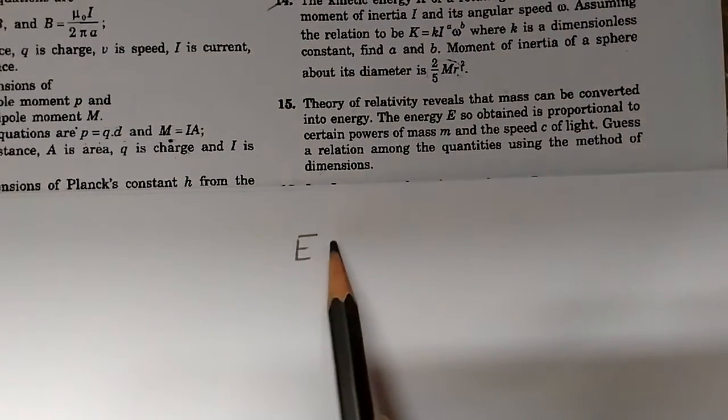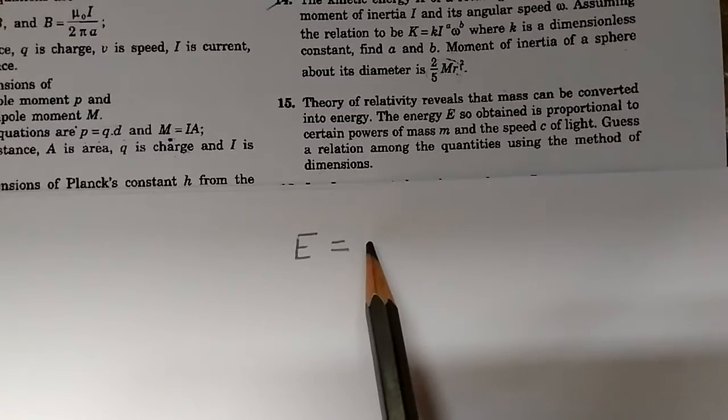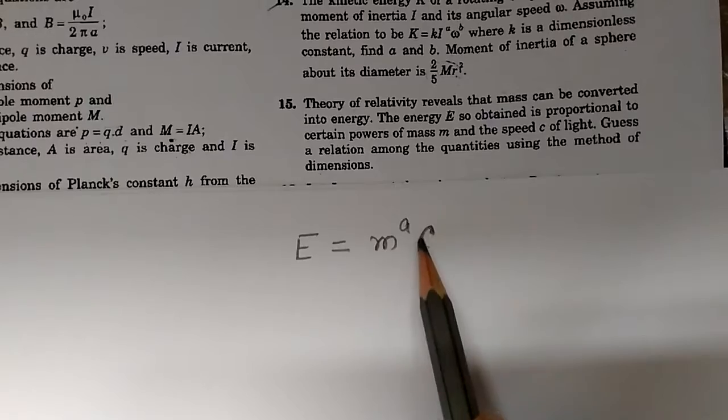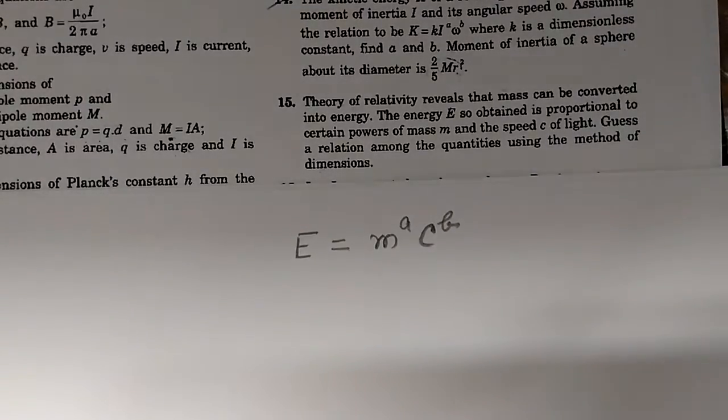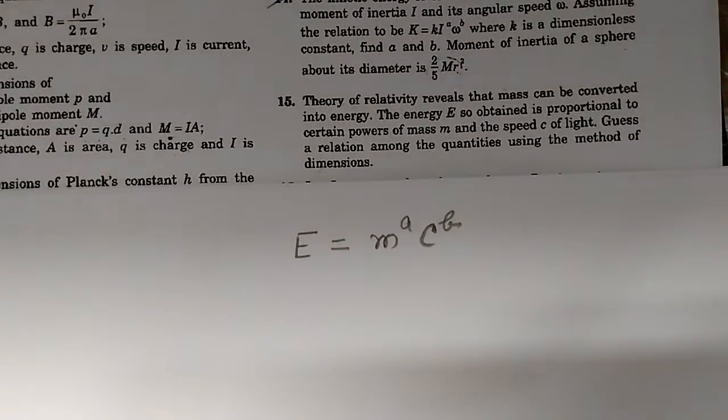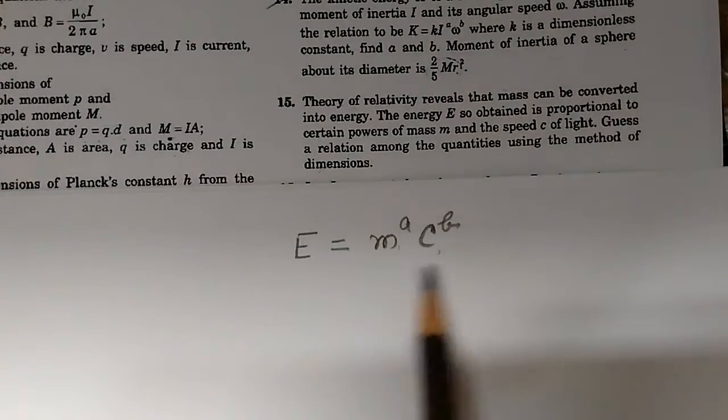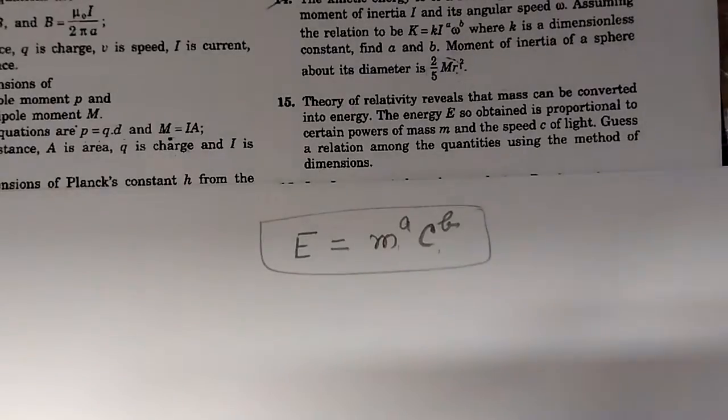Let's say this energy E is equal to mass to the power of A and velocity C to the power of B. This is how the relationship between energy, mass, and speed of light is governed.